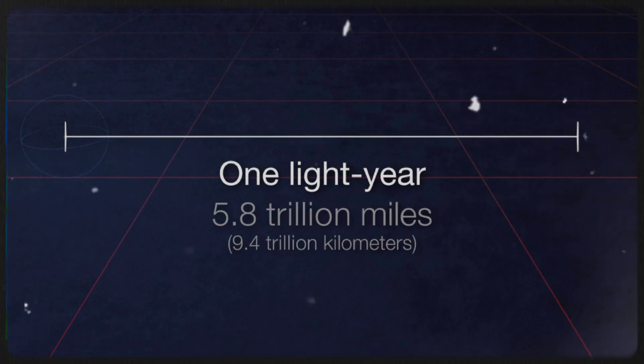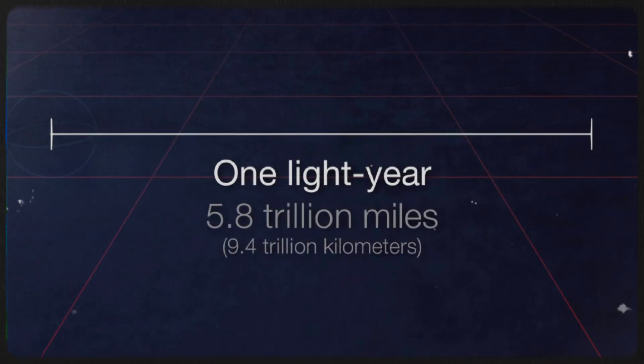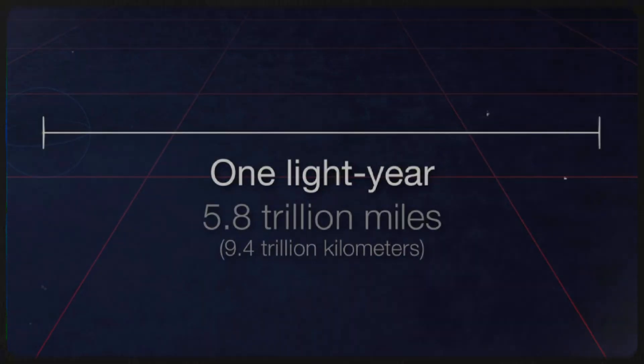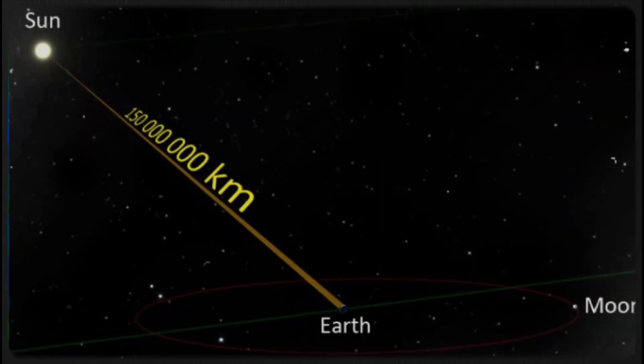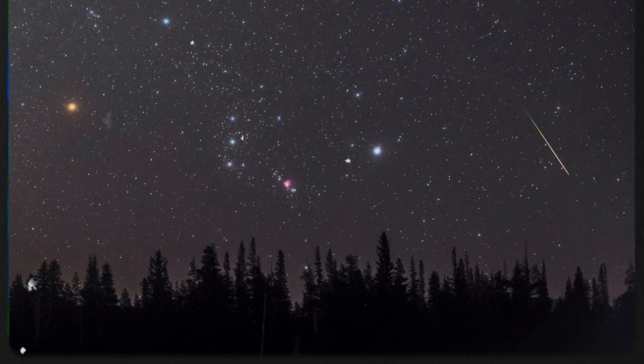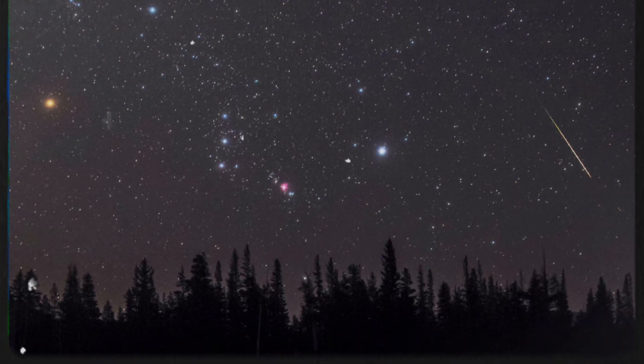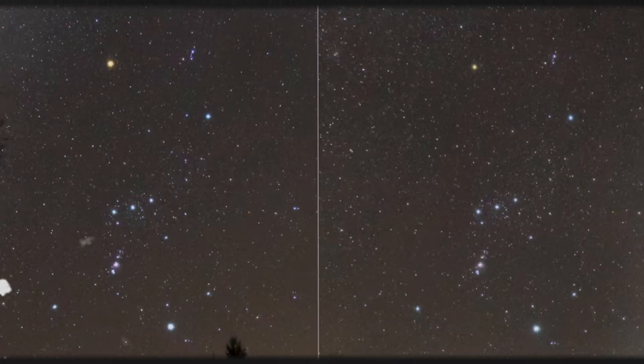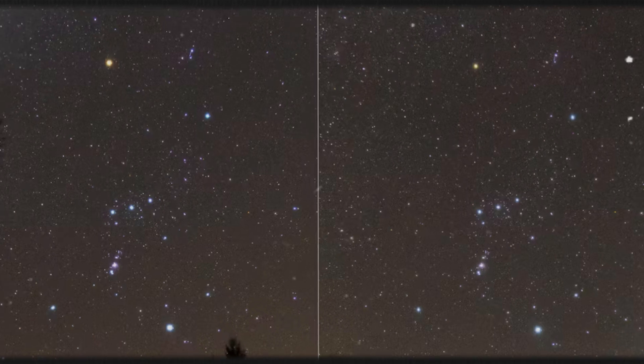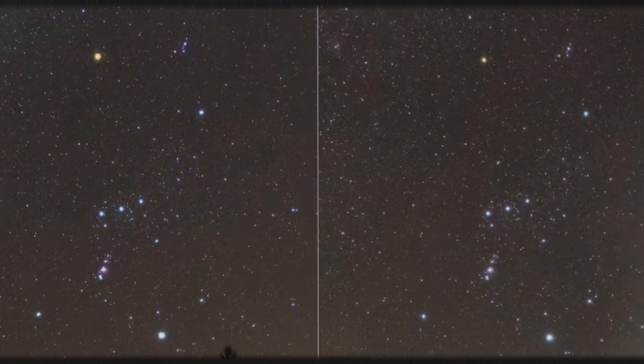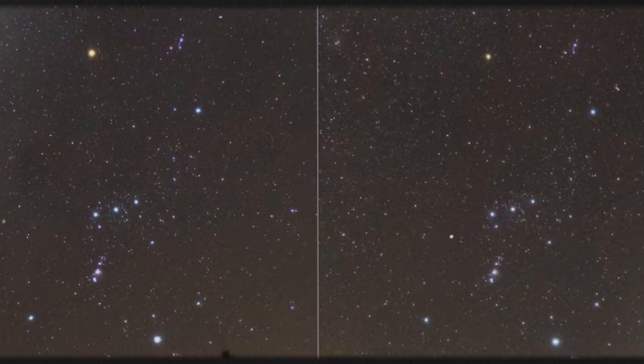To put things into perspective, one light year equals roughly 5.88 trillion miles, which gives us a sense of the immense scale of our universe. Betelgeuse, located approximately 725 light years away, is over 4,267 trillion miles from Earth. This colossal distance essentially acts as a natural cosmic shield, protecting our planet from the harmful effects of the explosion.